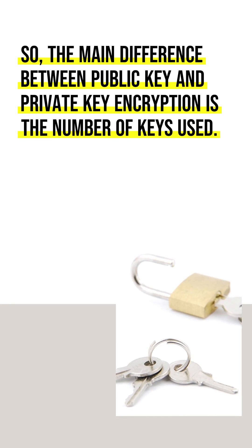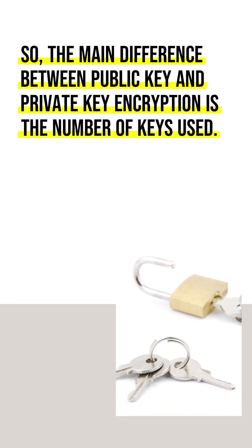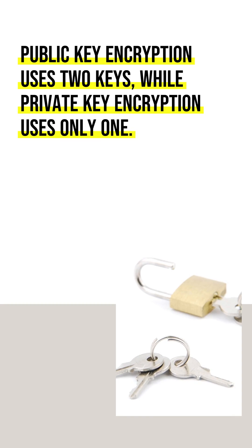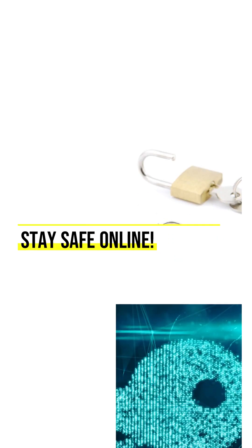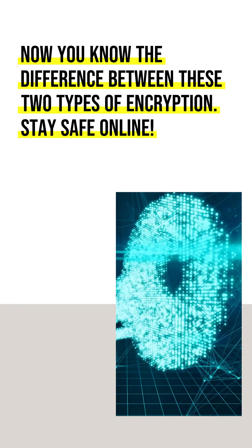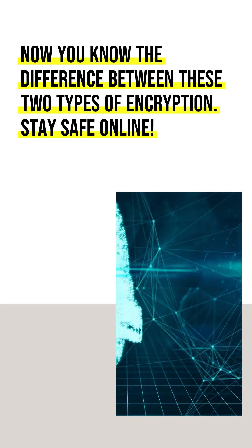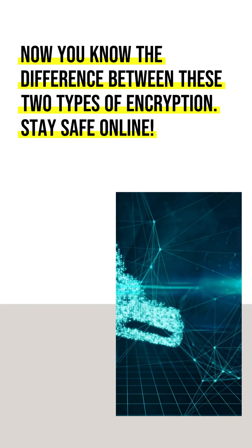So, the main difference between public key and private key encryption is the number of keys used. Public key encryption uses two keys, while private key encryption uses only one. Now you know the difference between these two types of encryption. Stay safe online.